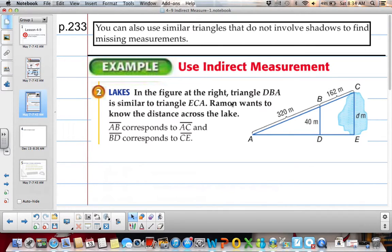So in the figure at the right, triangle DBA. So I would maybe make sure that we know which triangle we're talking about. DBA is similar to BCA.